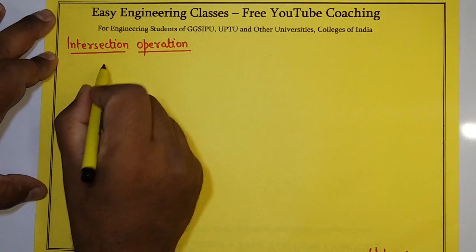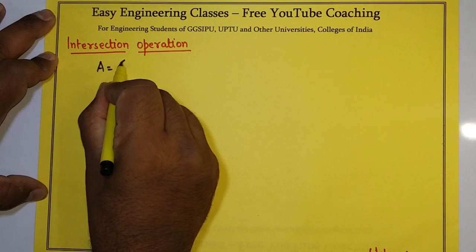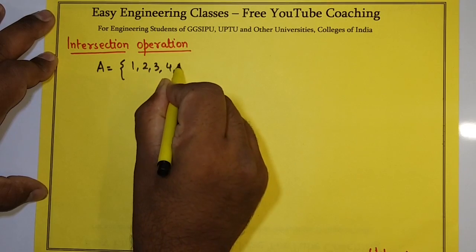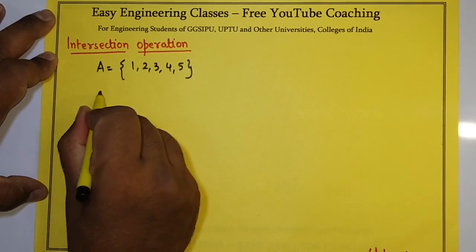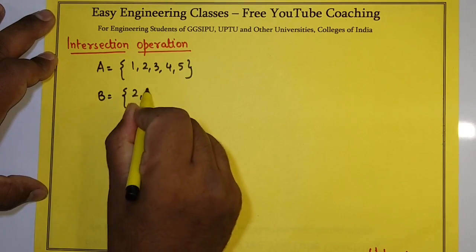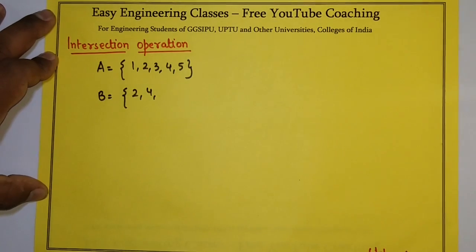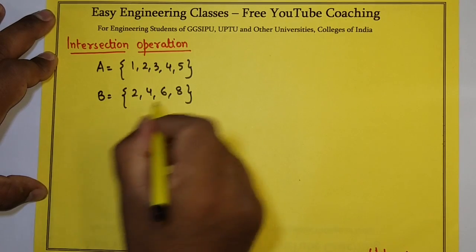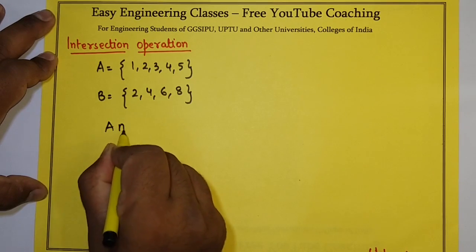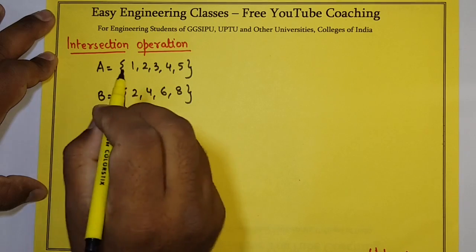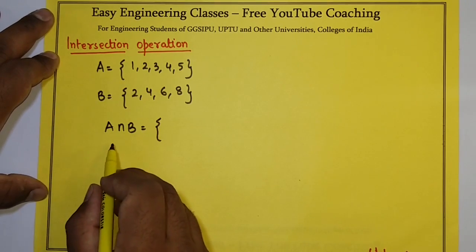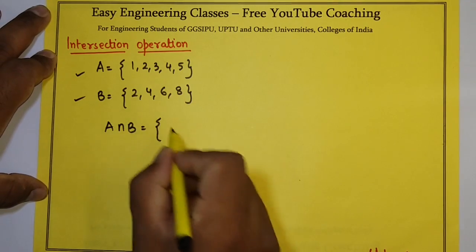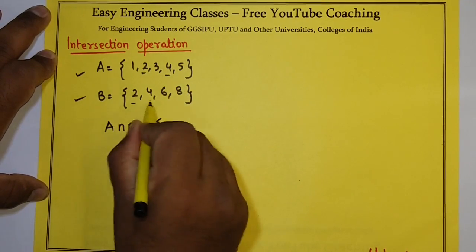What do you mean by intersect? Suppose if I have a set A with values 1, 2, 3, 4, and 5, and one set B with values 2, 4, 6, and 8. So, what will be the value of A intersection B? A intersection B means the values which are common in both sets A and B. So I will get the result as 2 and 4.